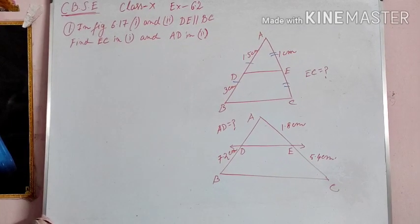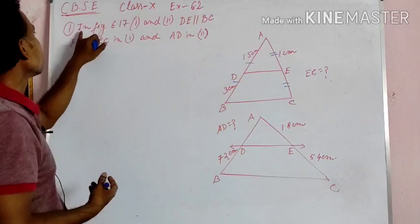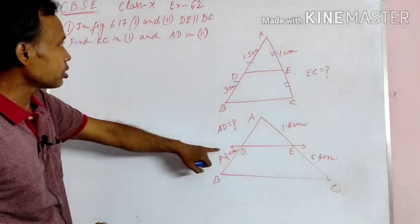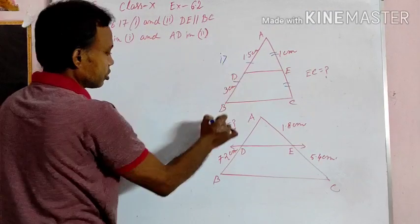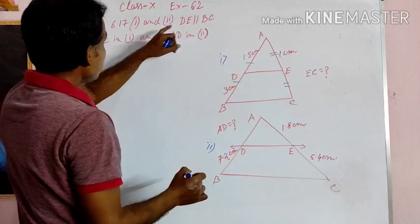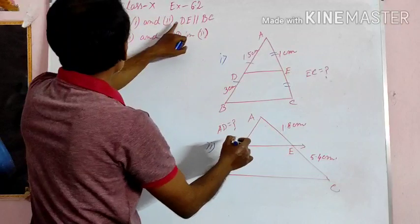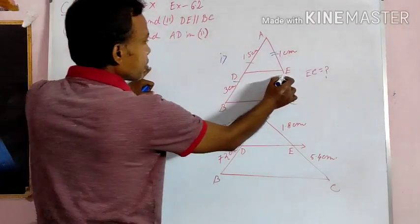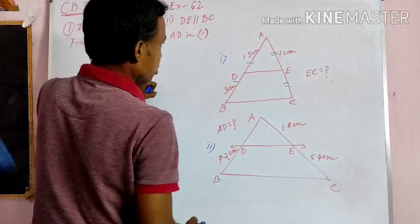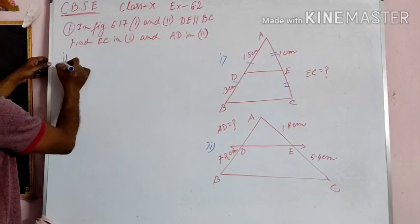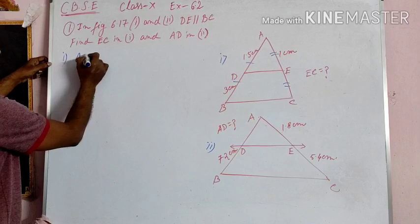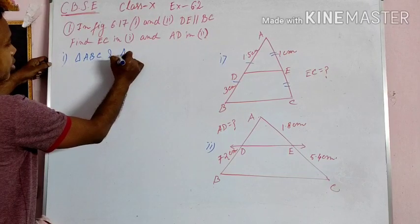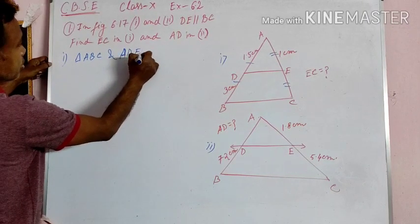CBSE Class 10, Exercise 6.2, Question 1. In Figure 6.17, we have two figures. In Figure 1 and Figure 2, DE is parallel to BC. We have to find the value of EC and the value of AD. So first, we solve Question 1. In triangle ABC and triangle ADE, since DE is parallel to BC.